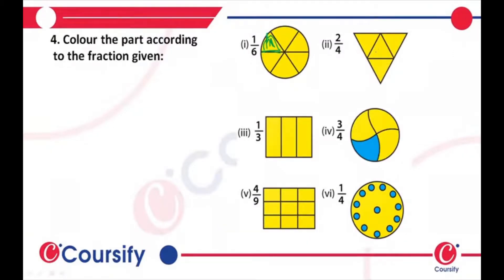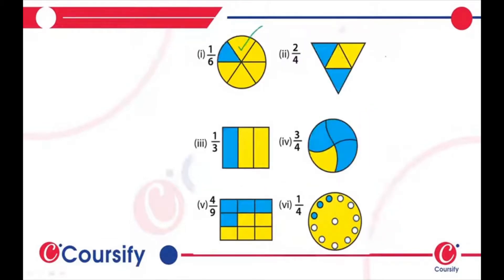Let's count the total number of parts first. This is 2/4, so 1, 2, 3, 4. Out of 4 parts, you have to color 2 out of 4, just color it like this. Color any 2 of these parts. So the answer is 2/4.